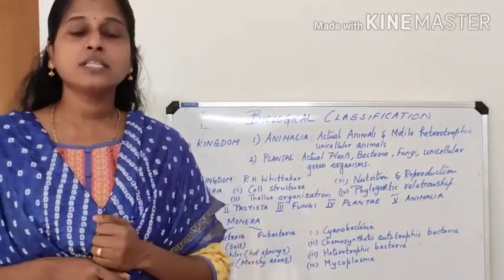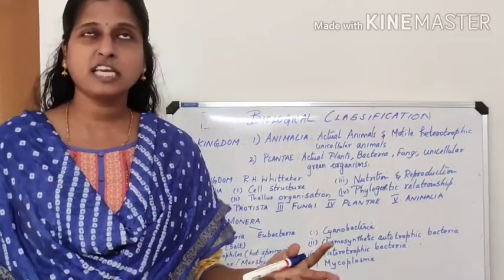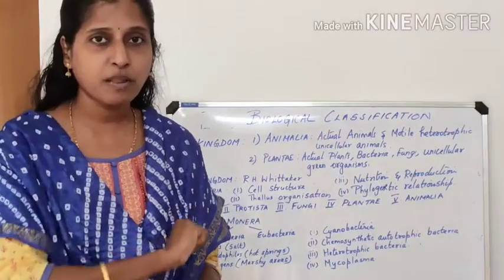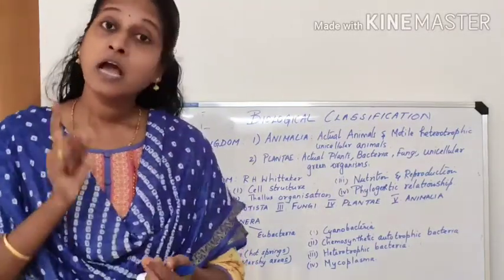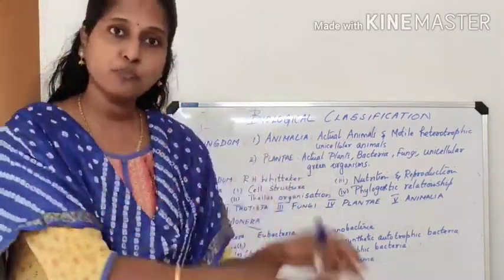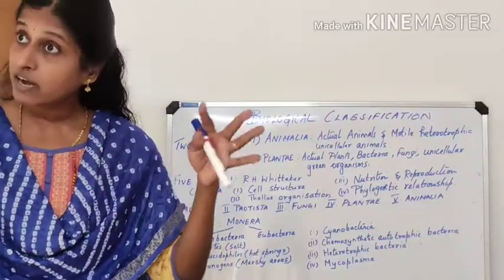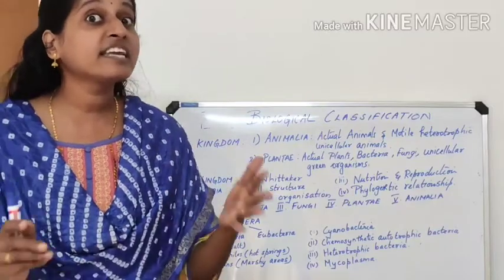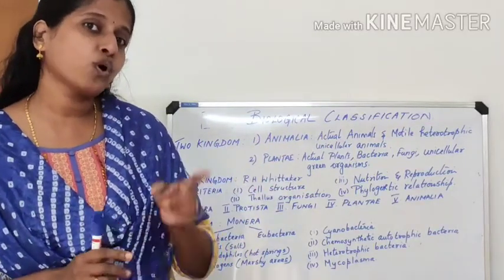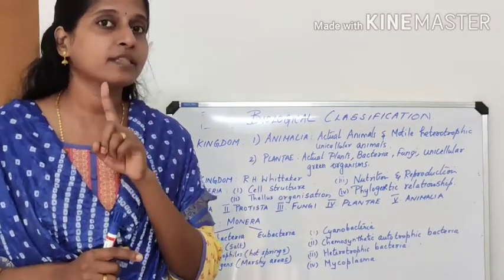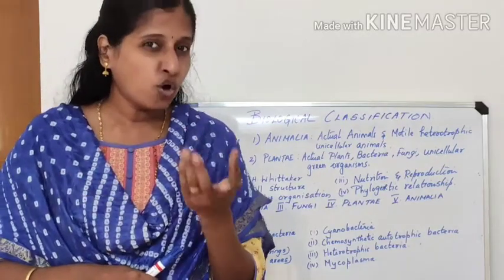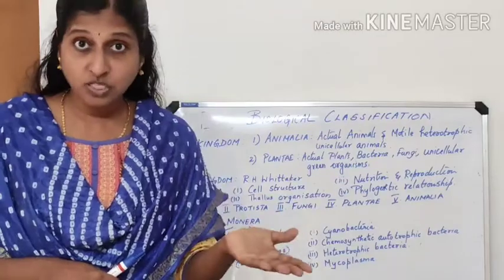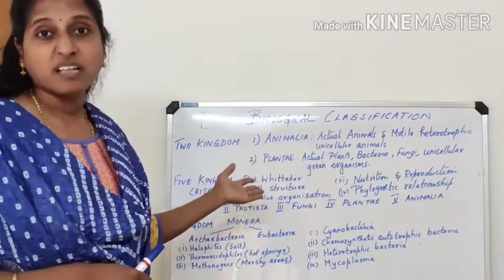In the plant kingdom, actual plants were included, along with all bacteria and fungi. Unicellular green organisms that are autotrophic — meaning they can prepare their own food — and non-motile were also placed in the plant kingdom.